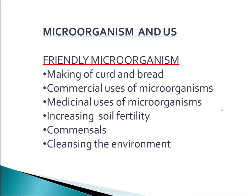Vaccines are dead or weakened microbes introduced into the body to produce antibodies. The first vaccine for smallpox was developed by English scientist Edward Jenner in 1798, for which he is known as the father of immunology. Diseases like polio, cholera, tuberculosis, smallpox, and hepatitis can be prevented through vaccination.